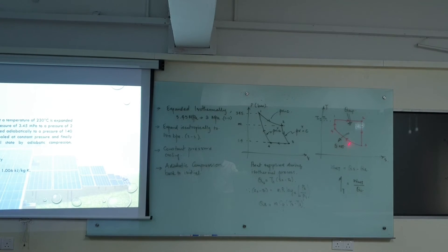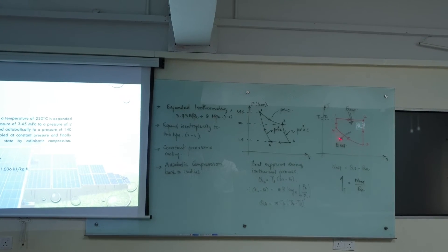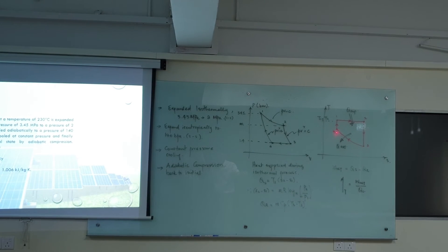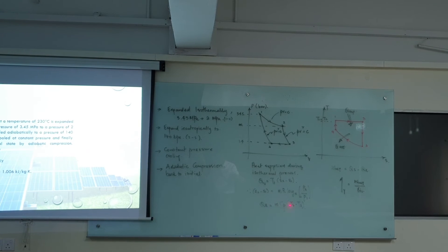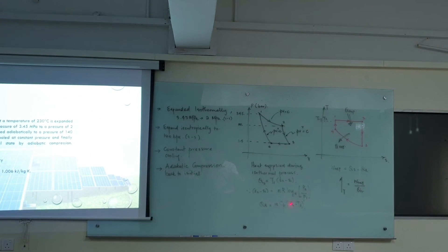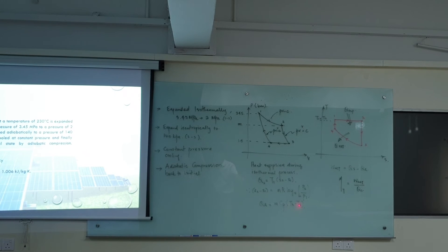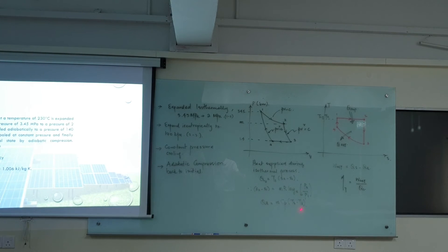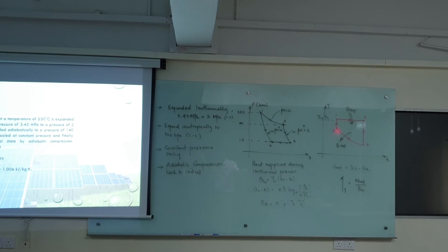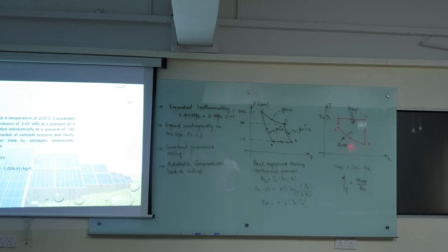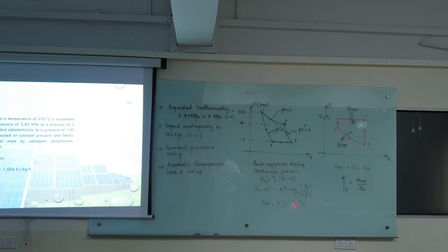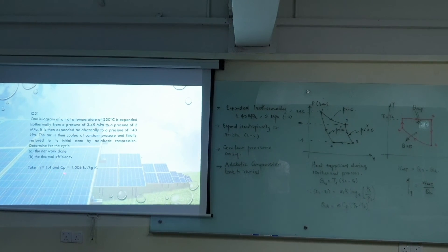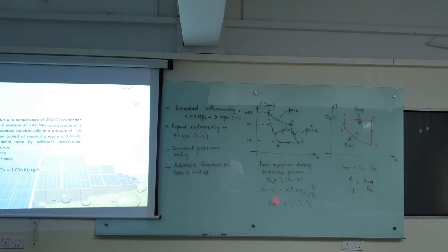Now then here you have heat rejected, that is the constant pressure process. So that is given as M·Cp·(T4 minus T3). Usually I take maximum minus minimum temperature. We always try to ignore the negative sign, so I always take the maximum minus the minimum temperature. So Cp can be taken as 1.006 in the question. Gamma can be taken as 1.4 and mass can be taken as 1 kg.